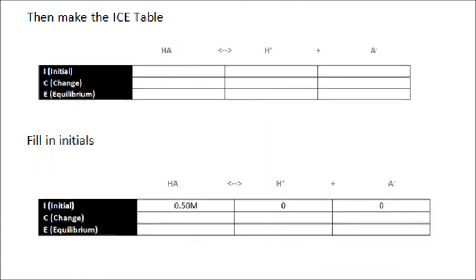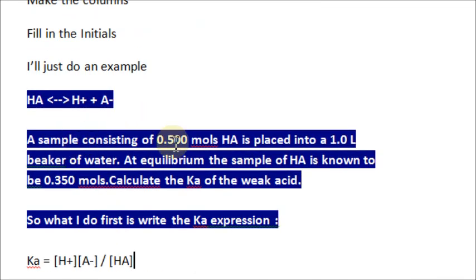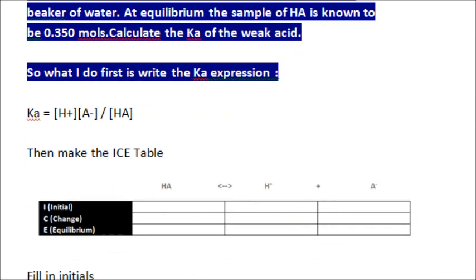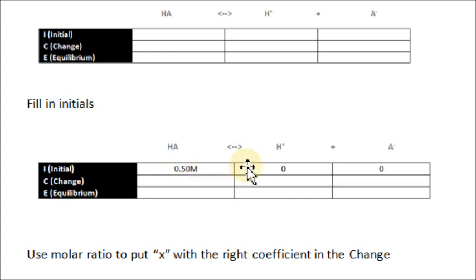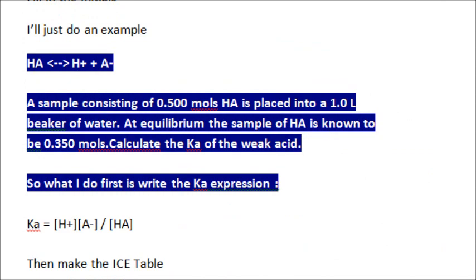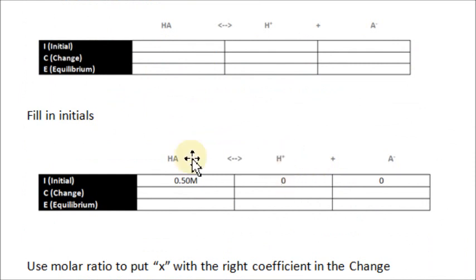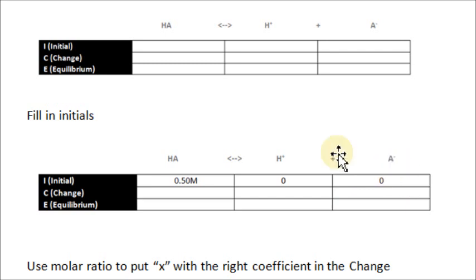Step two: fill in the initials that the problem gives you. The problem will always give you an initial. A sample consisting of 0.50 moles of HA is placed into 1 liter — remember, these have to be in concentration. In this case it is 0.50 molarity, because it's in a 1-liter beaker. So you write in 0.50 molarity as the initial for HA. Initially, you're going to have 0 H-plus, because the reaction has not started yet — none of the HA has broken up. So H-plus initial is 0, and A-minus initial is also 0.